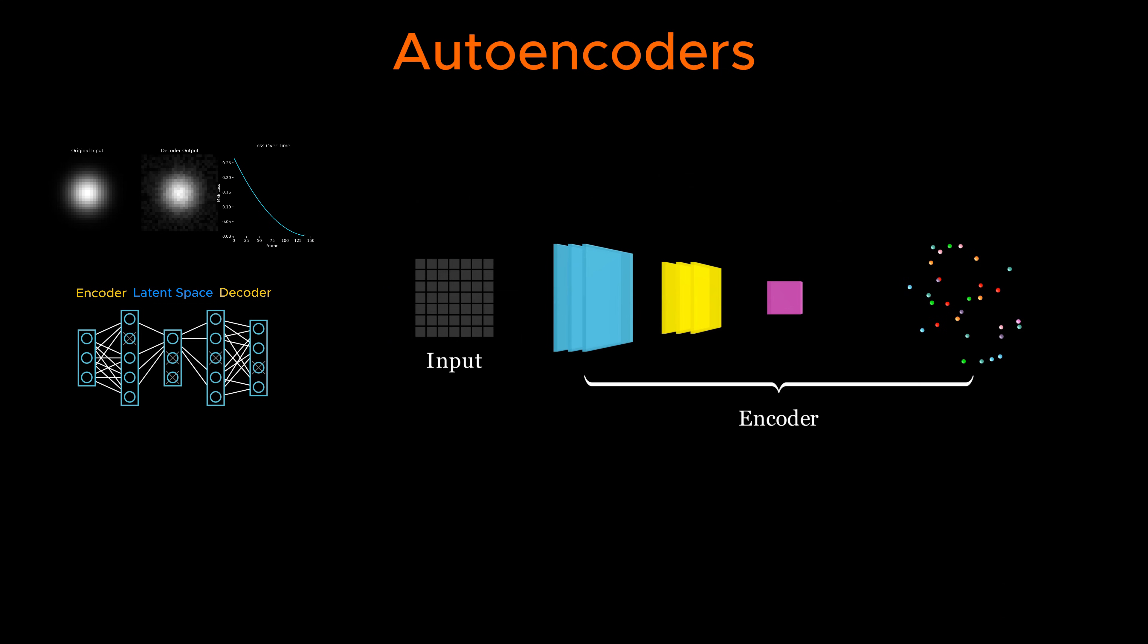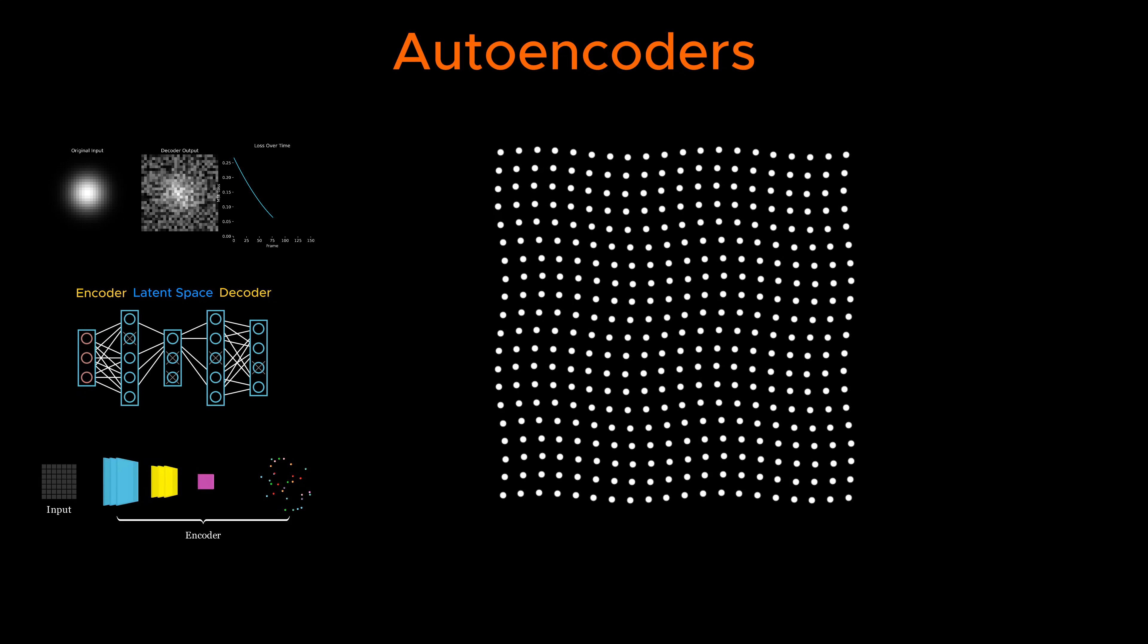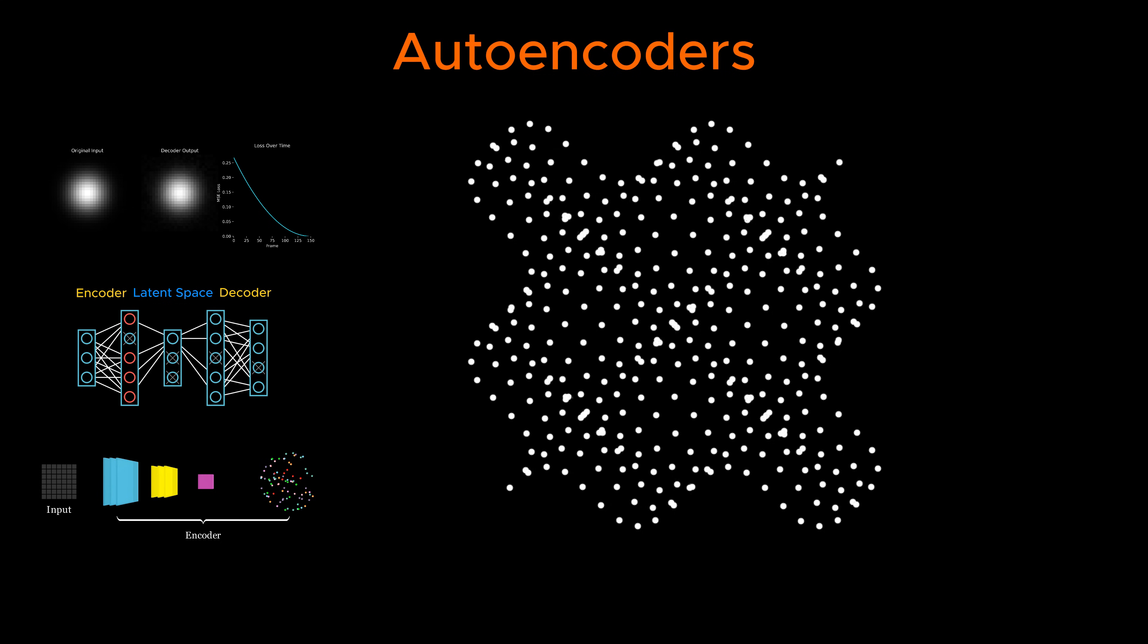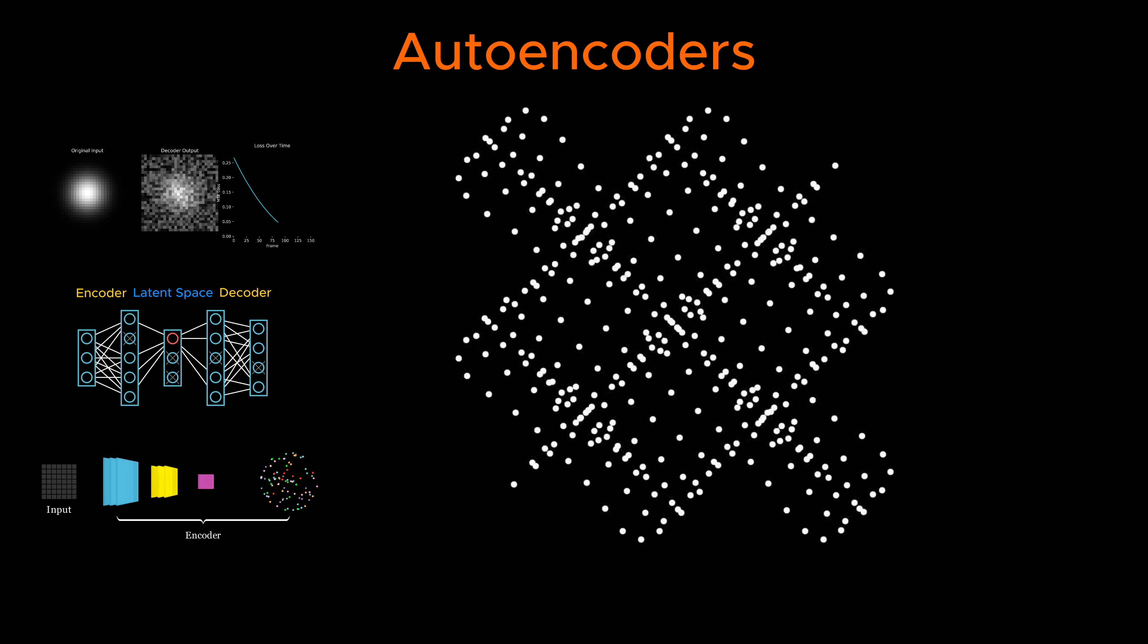Once an autoencoder is trained, one can use it to reduce the dimensionality of new data by passing it to the encoder part and extracting the latent representation from the bottleneck layer. This transformation of original data to latent space has a non-linear nature, allowing the capture of complex patterns in the data.